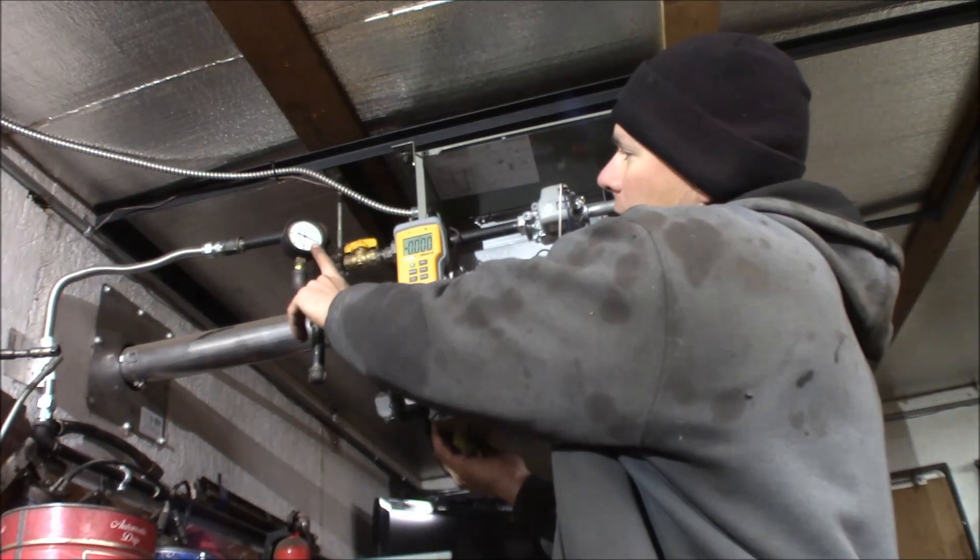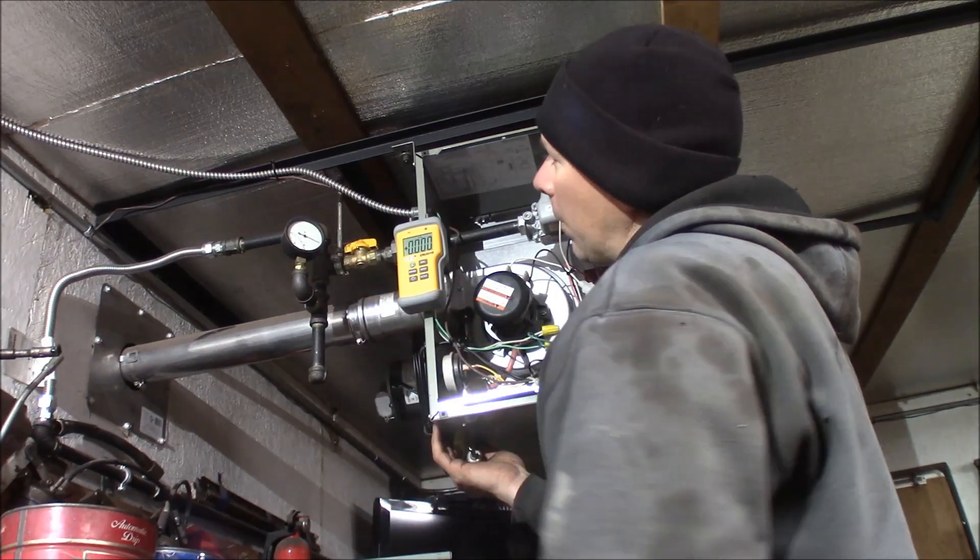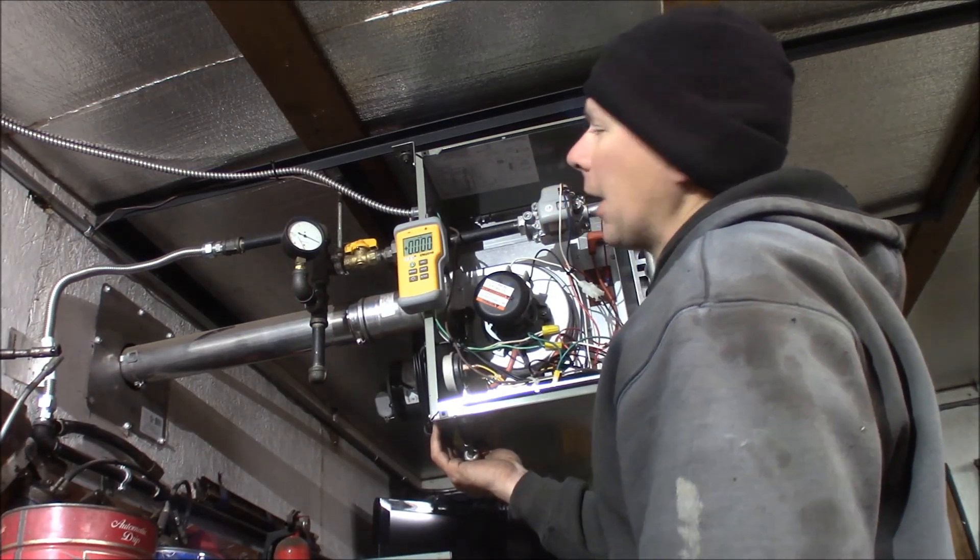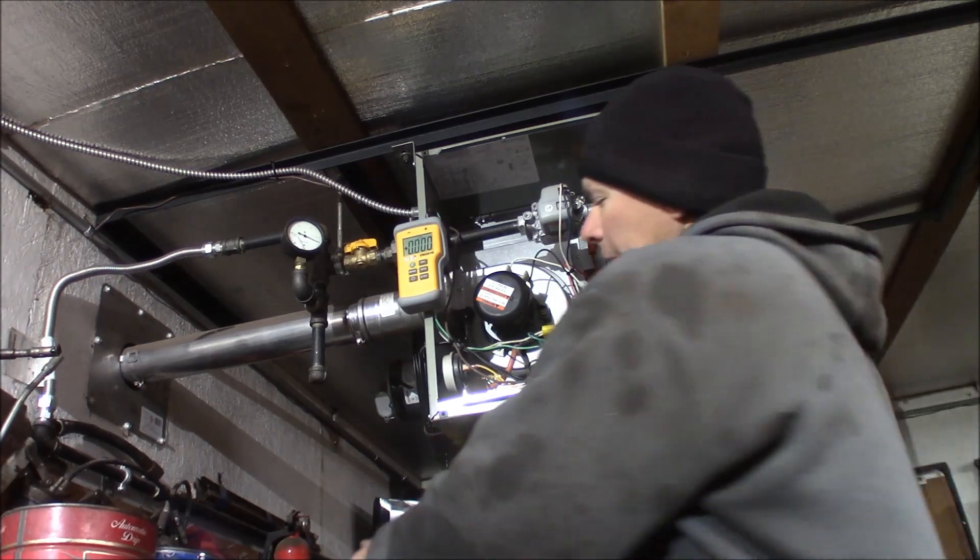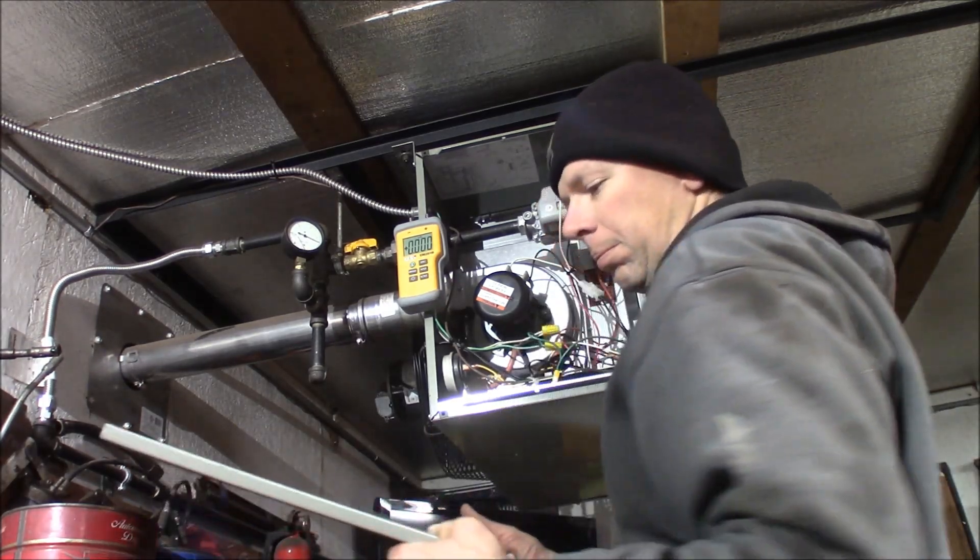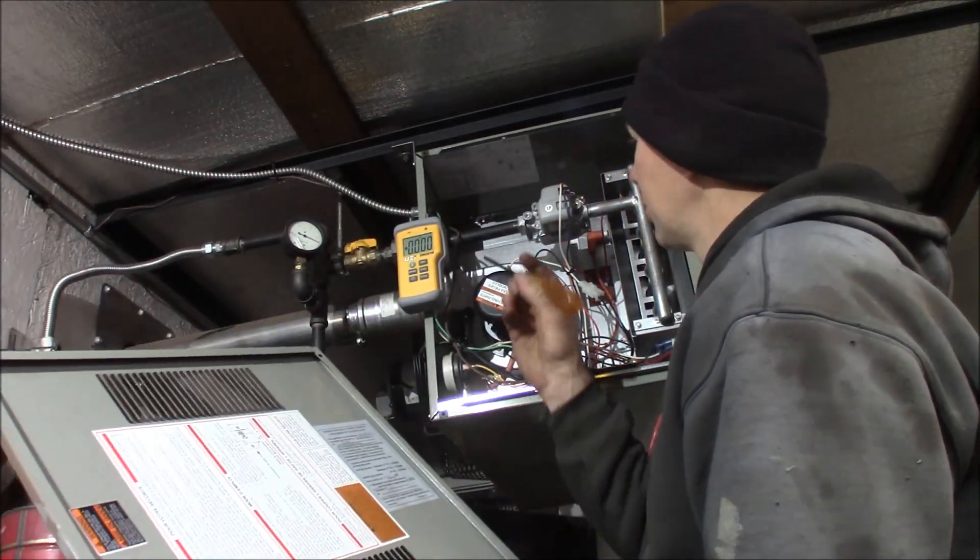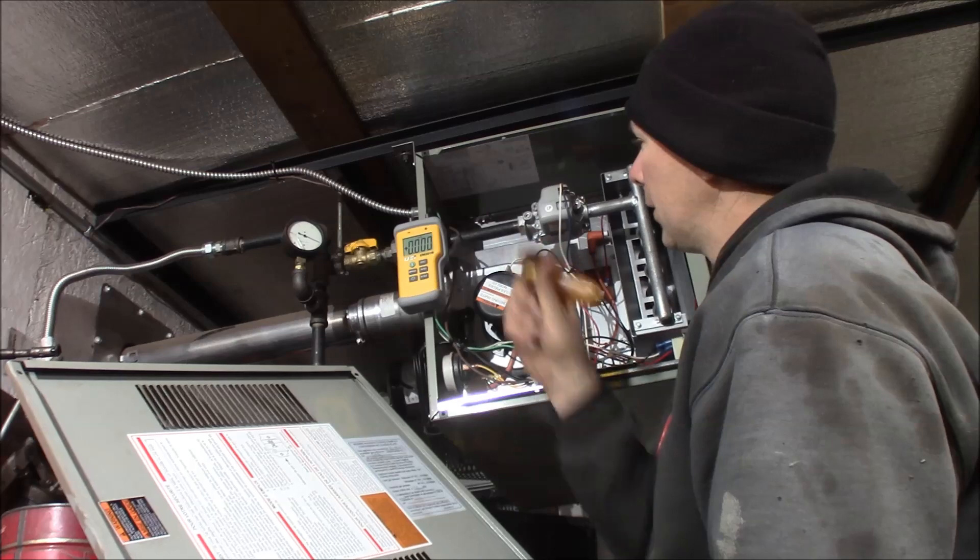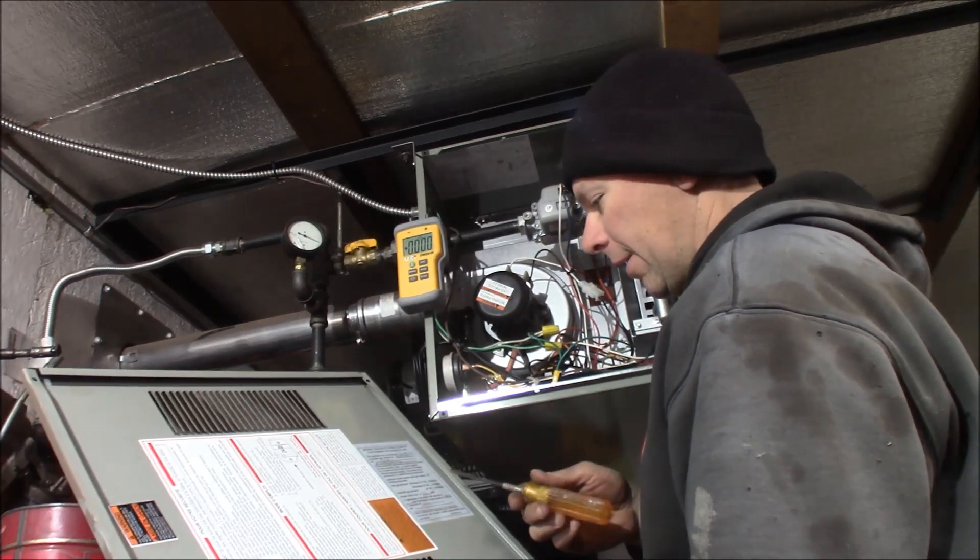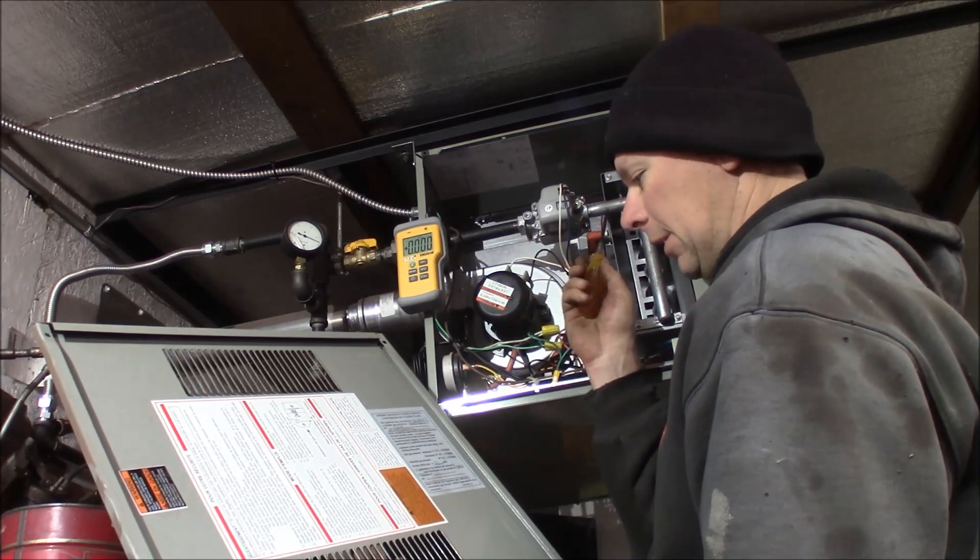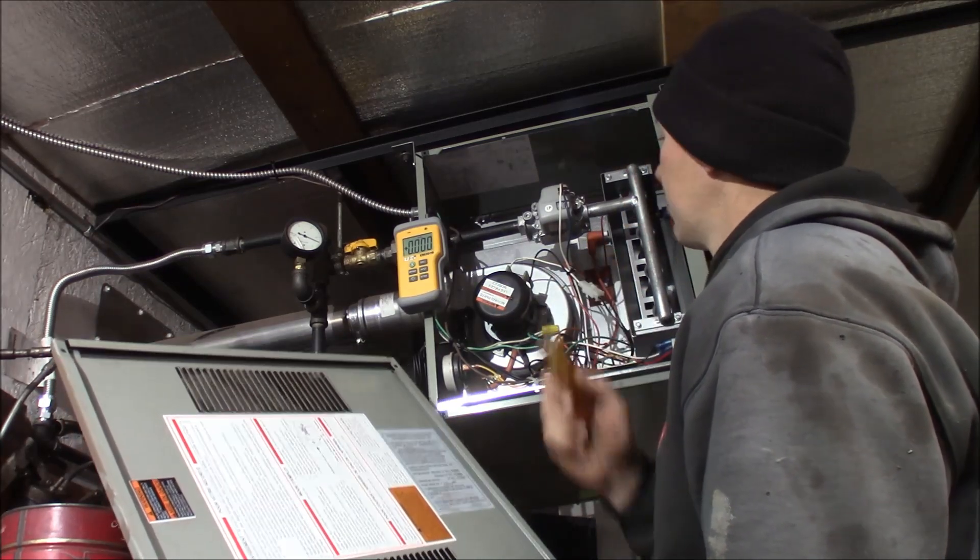But I have a gauge which right now is showing about 13 and a quarter, 13 and a half inches of water column. I've got my booklet here for this heater on propane. They want a minimum of 12 inches of water column here at the manifold and a maximum of 14, and then they want 10 here on the manifold side.